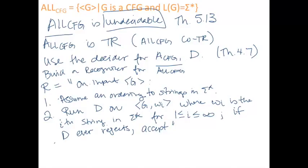So we've seen that we can build a recognizer for ALL_CFG-bar, therefore ALL_CFG is co-Turing recognizable. If ALL_CFG was also Turing recognizable, then ALL_CFG would be decidable — but we know it's not by theorem 5.13. Therefore, ALL_CFG cannot be Turing recognizable. It is just undecidable.